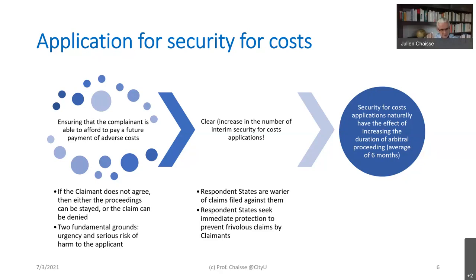Interestingly, this increase is also visible within a single proceeding with at least one case requesting more than one interim measure. While this indicates the growing preference towards the use of such applications in investment arbitration, it would be unfair to view this in isolation, in light of the rising number of investment treaty disputes worldwide. Statistically there is an increase in the number of applications, but it's also due to the fact that there is an increase in the number of investment disputes. What can for sure be concluded is that stakeholders within the process — notably respondent states — worried about claims filed against them, seek immediate protection to prevent frivolous claims by claimants unwilling to discharge obligations in the event of adverse awards.